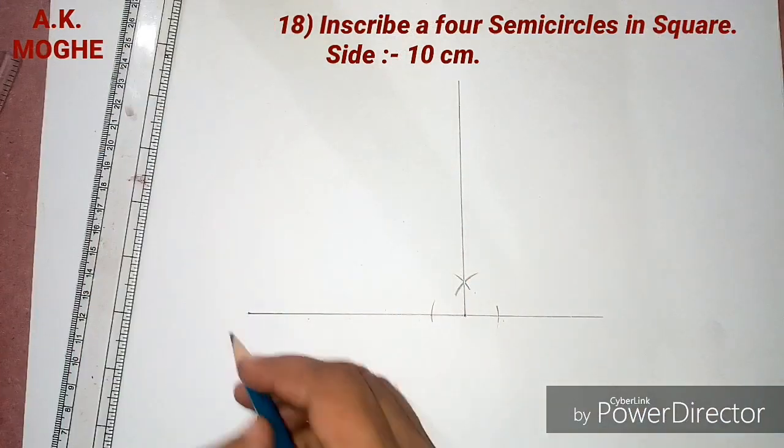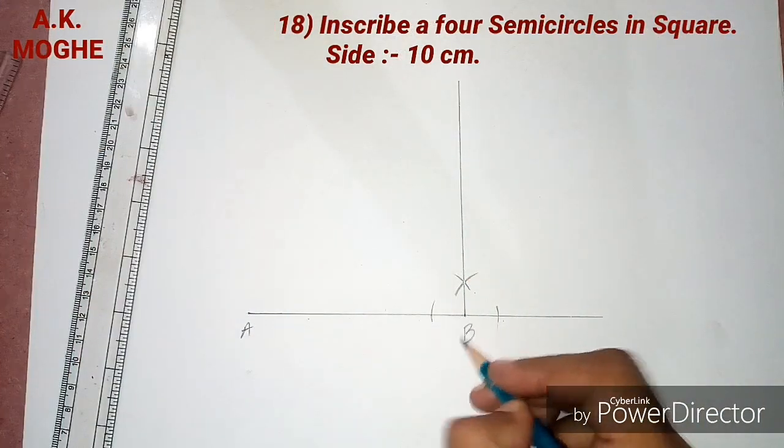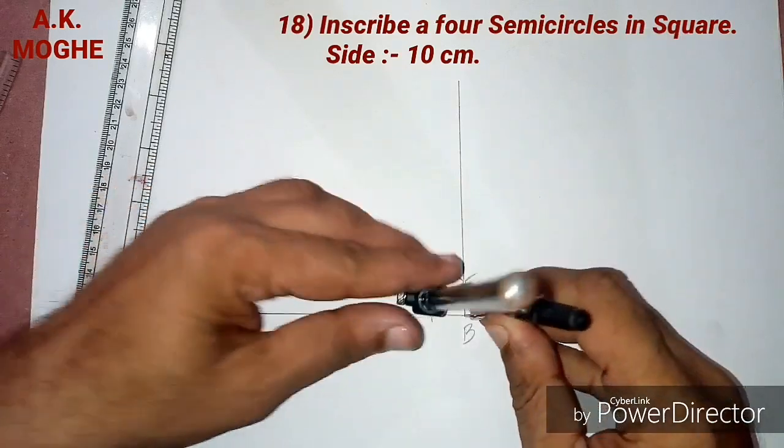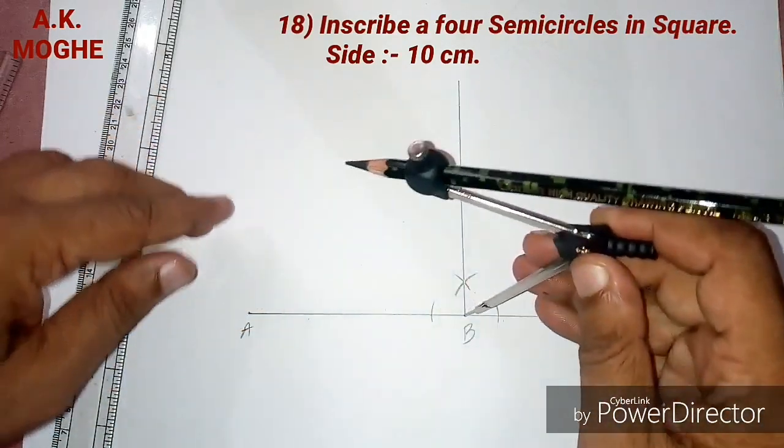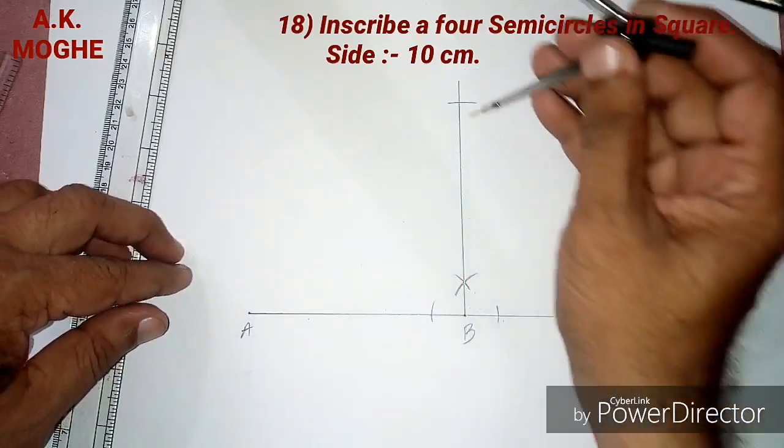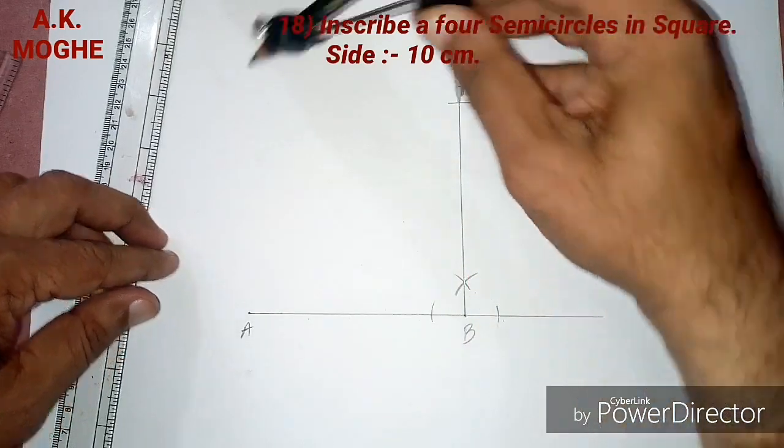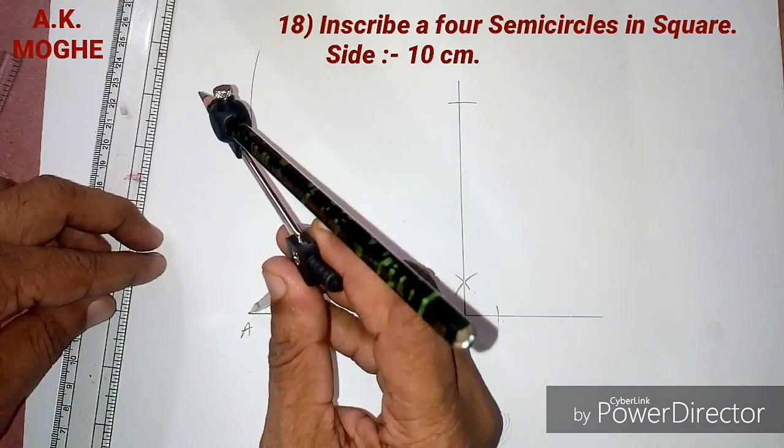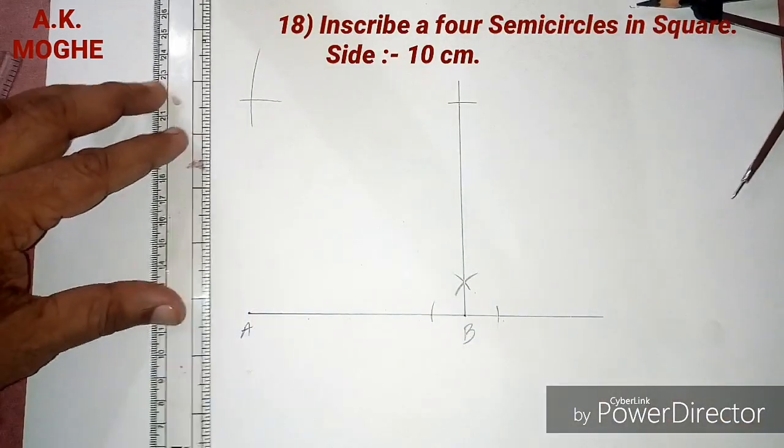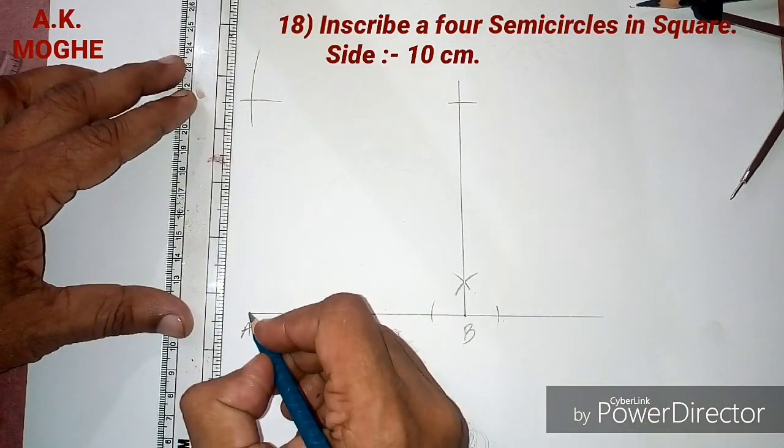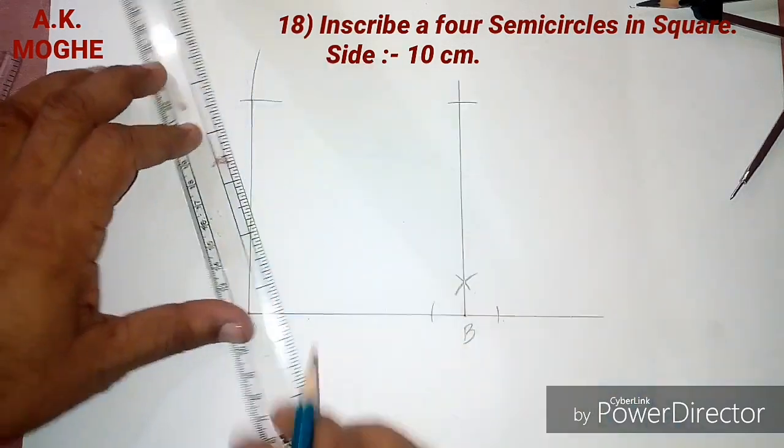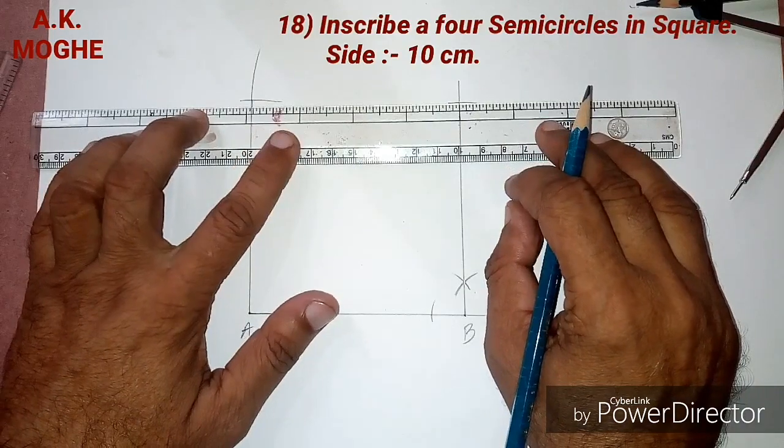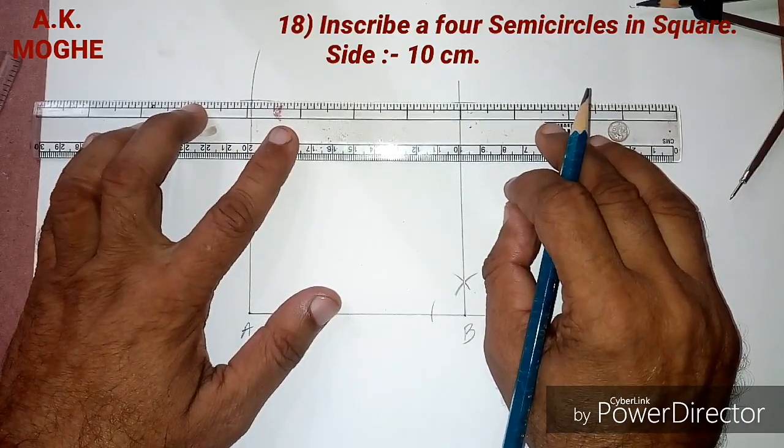Then we will take a 10 cm side in compass and we will complete the square, making one arc at vertical line and two arcs from vertical line and horizontal line. We will get the next point. So the square A, B, C, D is ready.